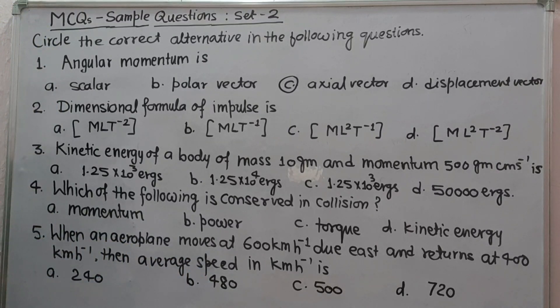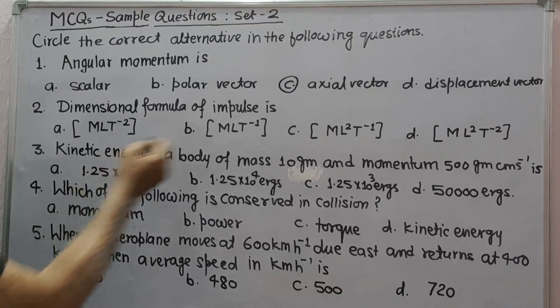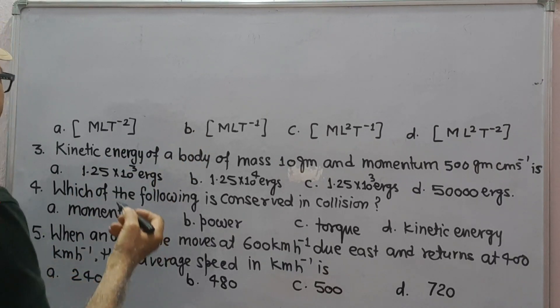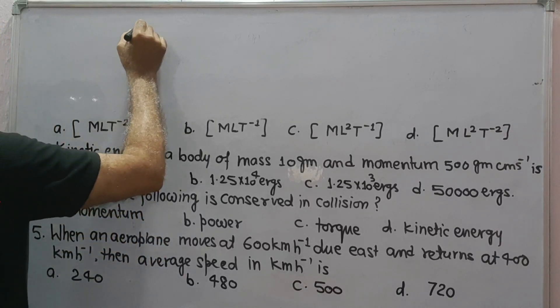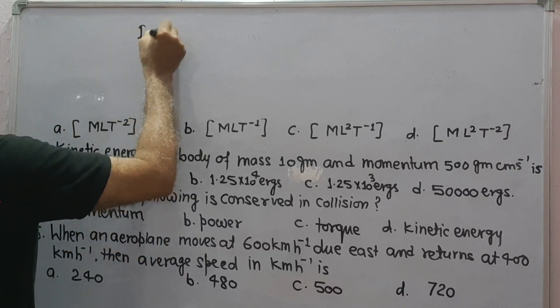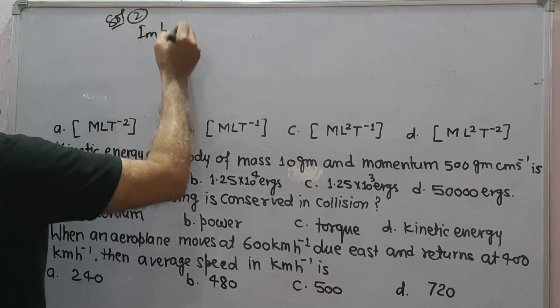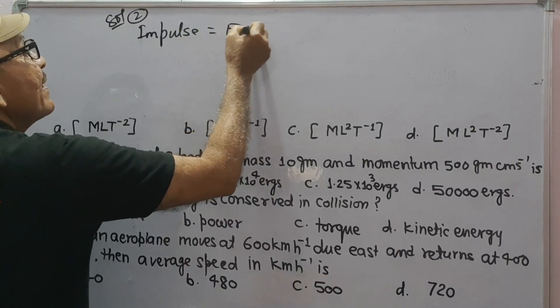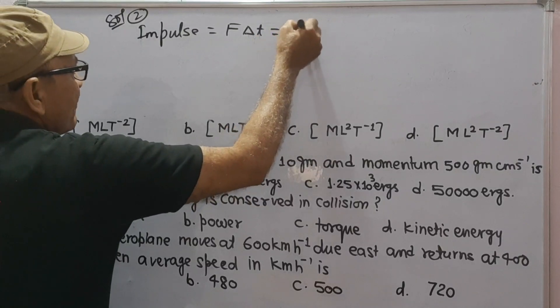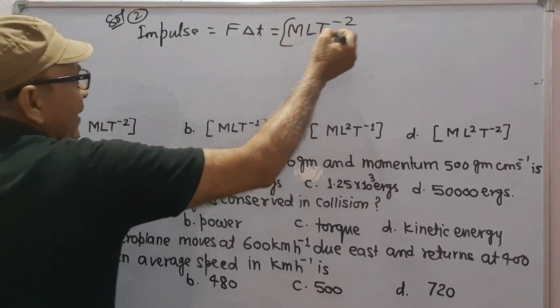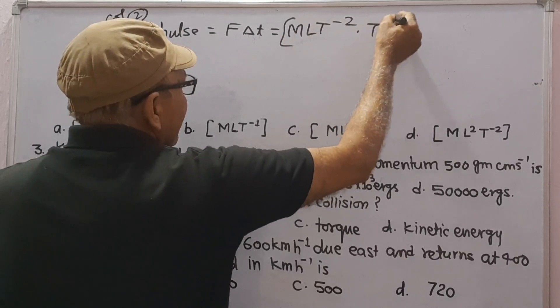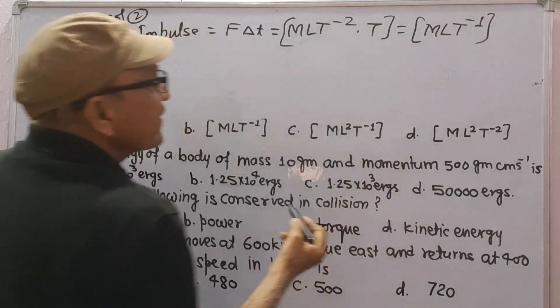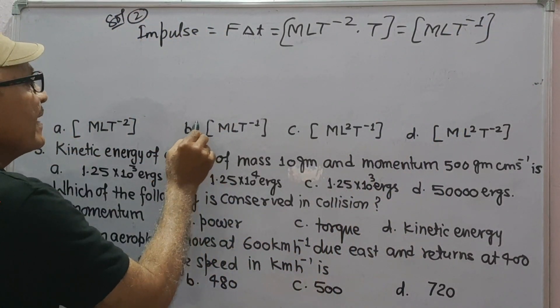Second question: dimensional formula for impulse is - these are the options. We know that impulse is equal to force into time, MLT^-2 into time T. So we get MLT^-1, that is the correct option will be B.